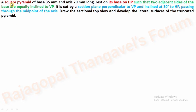A square pyramid of base 35 mm and axis 70 mm long rests on its base on HP such that two adjacent sides of the base are equally inclined to VP.